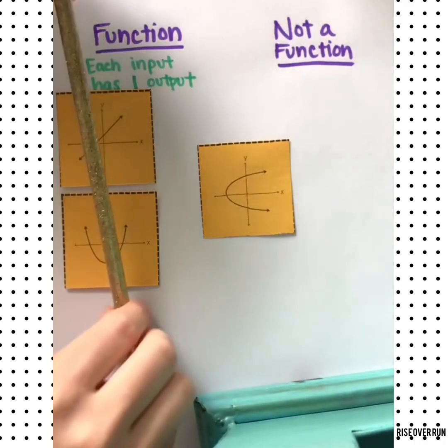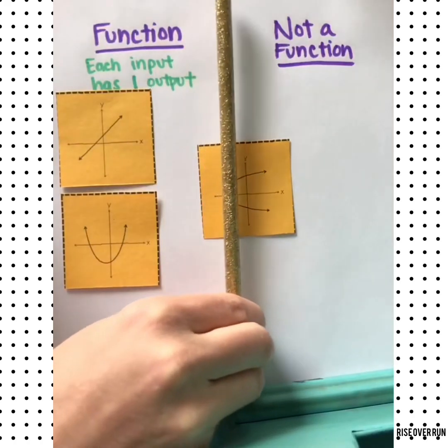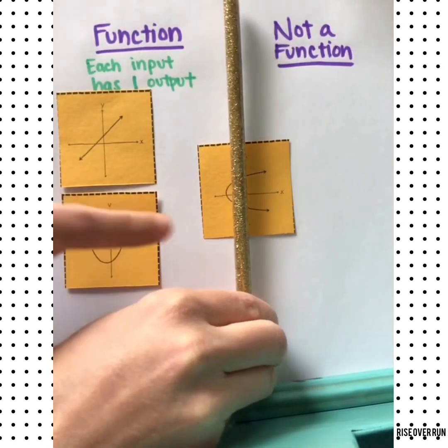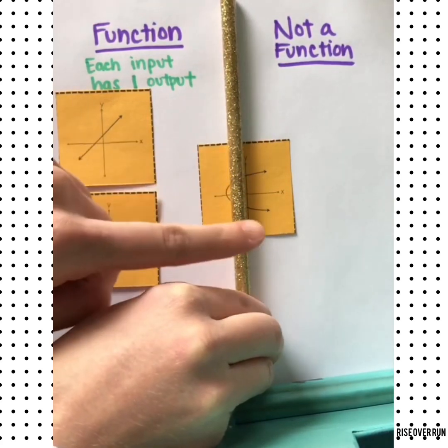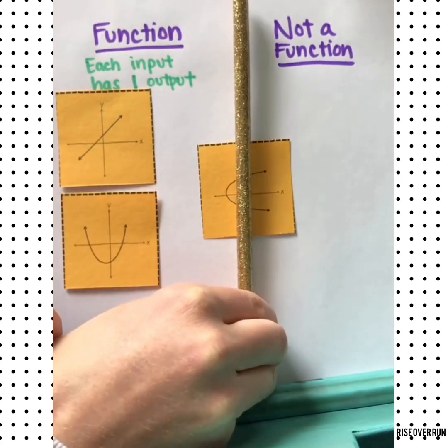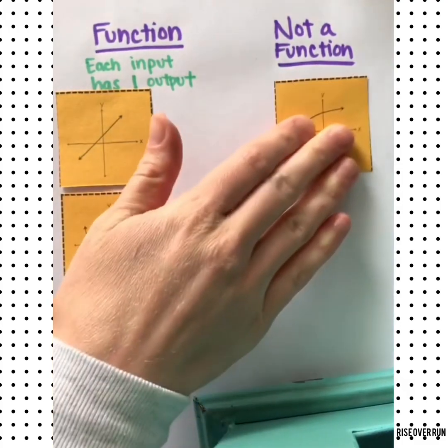Let's try this one. As I move my pencil across, making a vertical line, can you see how it hits both here and here on that line? That means it doesn't pass the test and that's not a function.